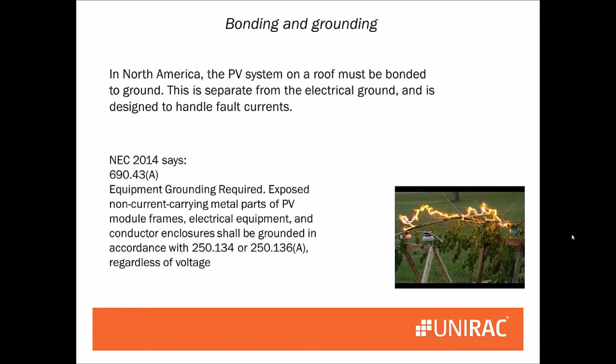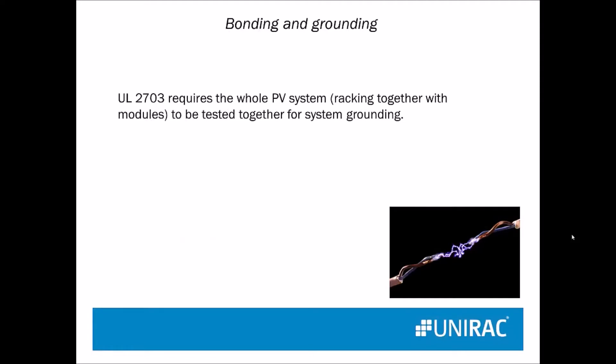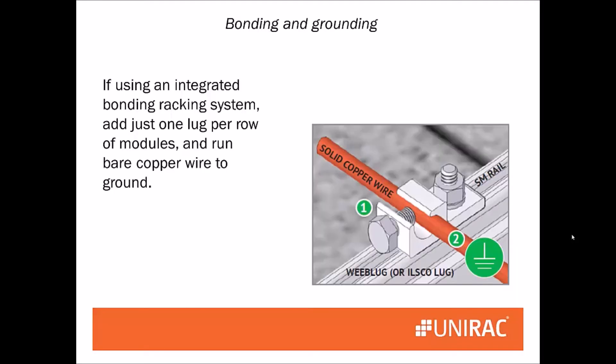In North America, the PV system must be grounded separately from the electrical ground. It's designed for either a fault or lightning. UL 2703 requires that the entire system — the modules and the racking together — be tested for bonding and grounding. If you're using an integrated system that has bonding built into it, you normally need to add only one lug and one bare copper wire to ground for each continuous row of modules.